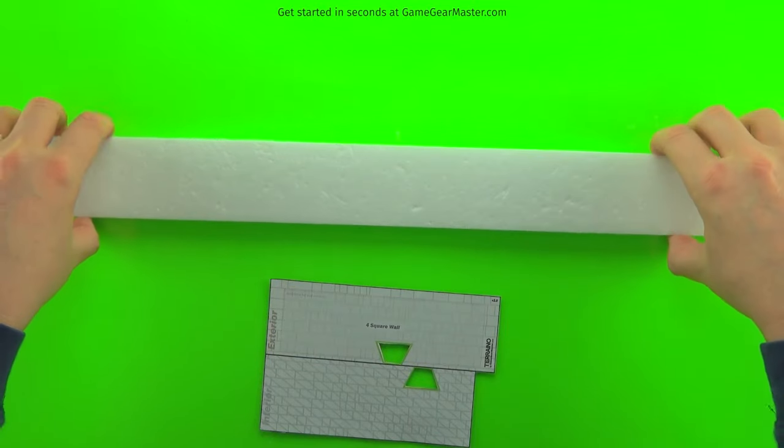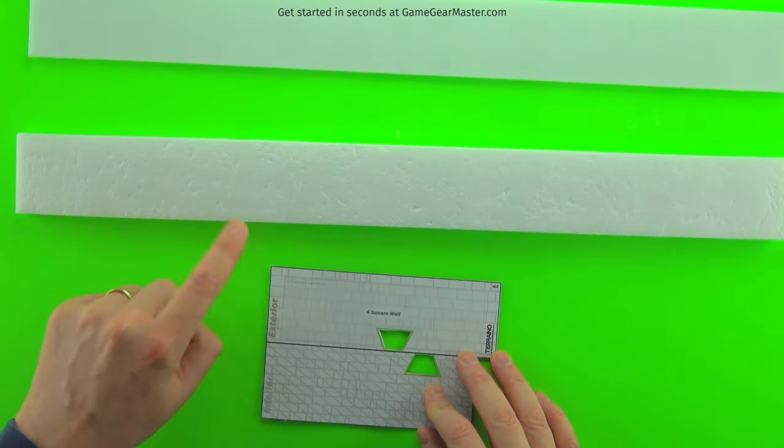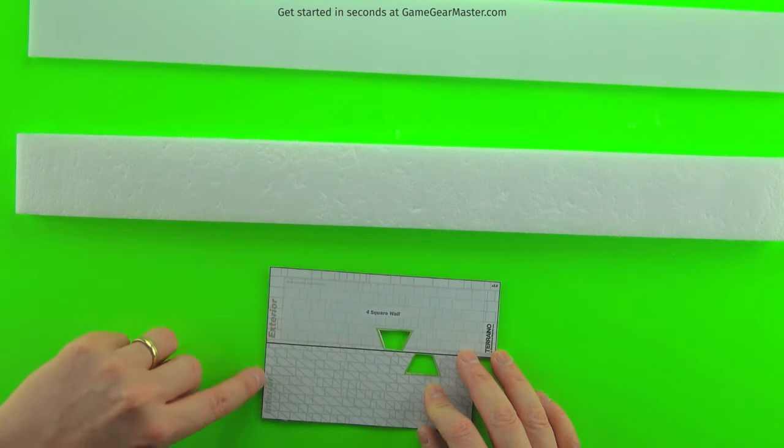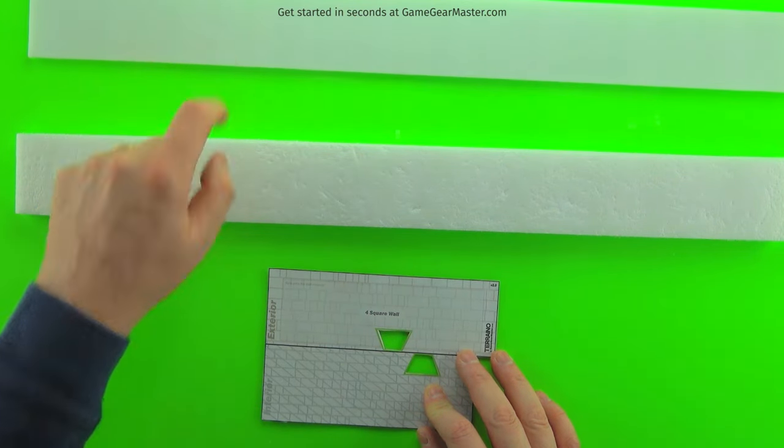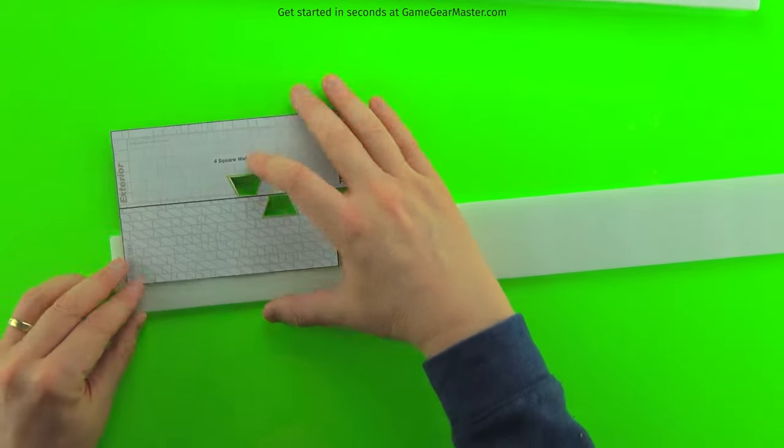And then it's time to trace on our wall templates. Now you'll notice there's two sections to each template. There's an exterior piece and an interior piece. And the interior piece gets the untextured strip. And the exterior pieces, they get the textured strips.